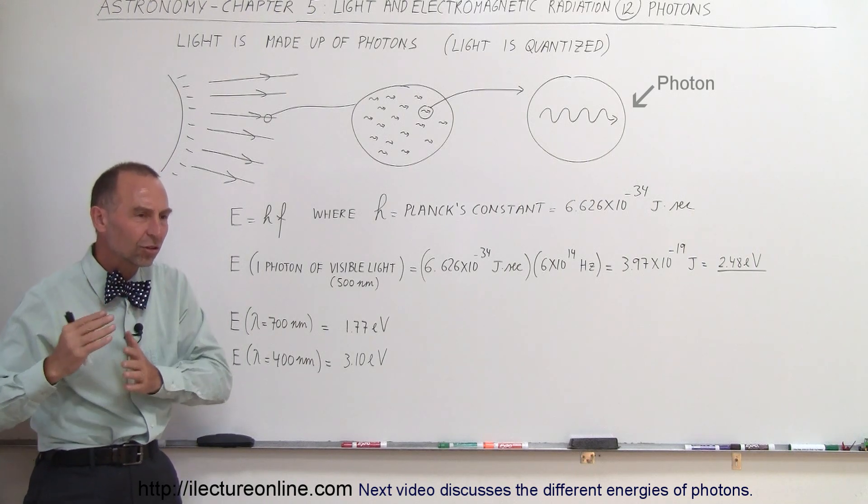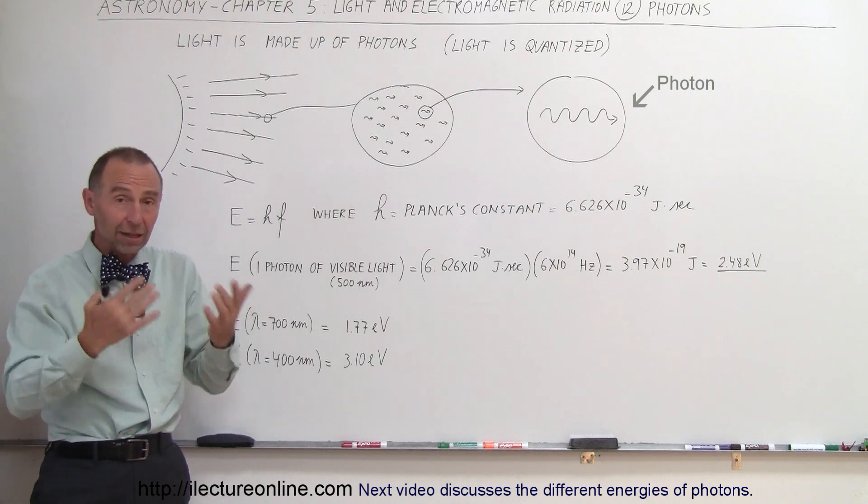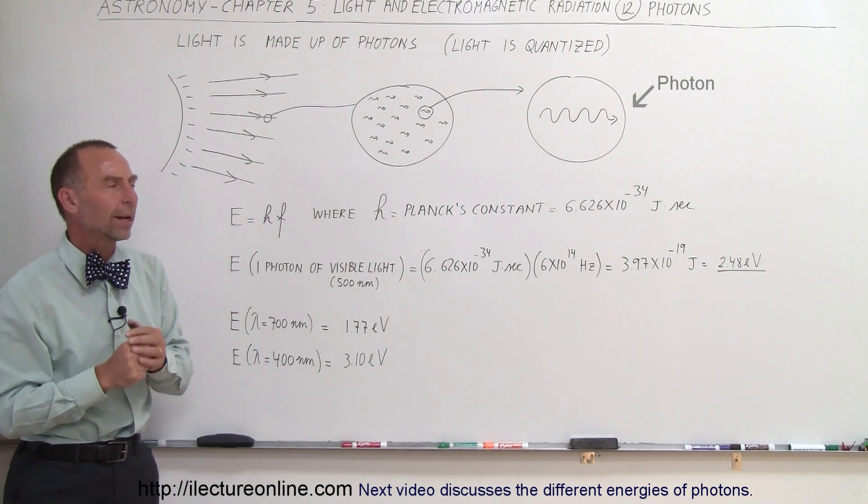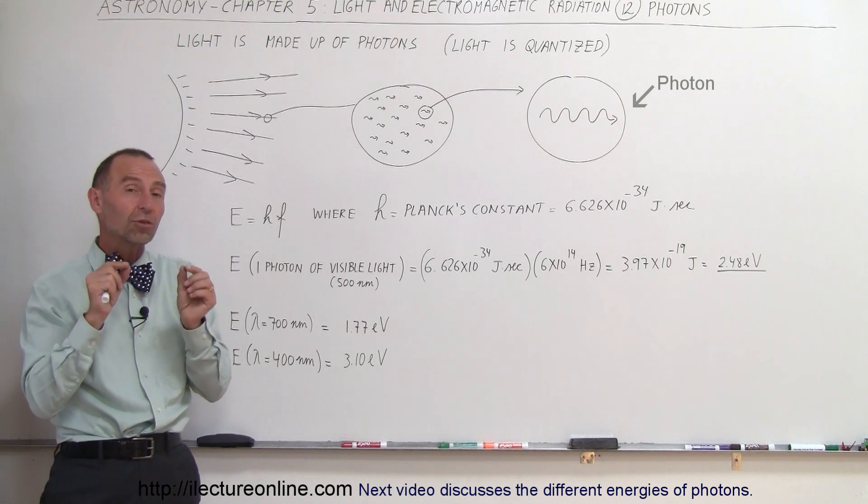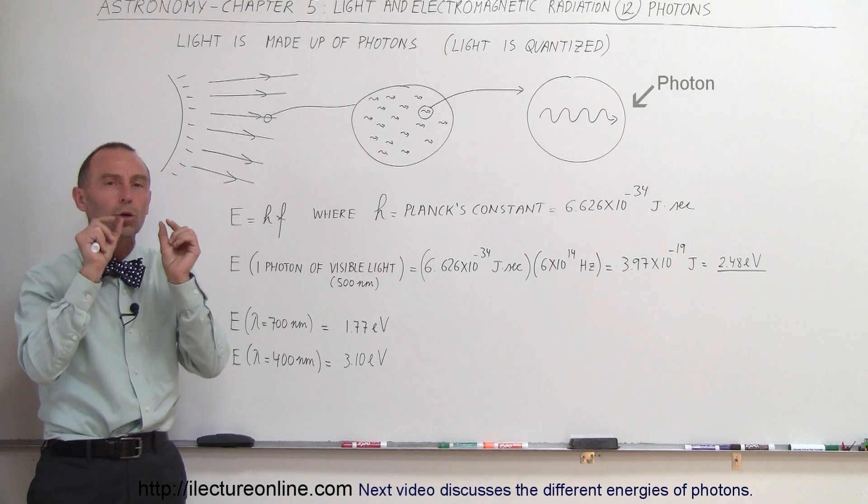Light wasn't just a continuous stream of electromagnetic radiation as we thought, although in many ways we can think of it as such and that's still a valid way of looking at light or electromagnetic radiation. But we also now must look at light and electromagnetic radiation in terms of it being what we call quantized.